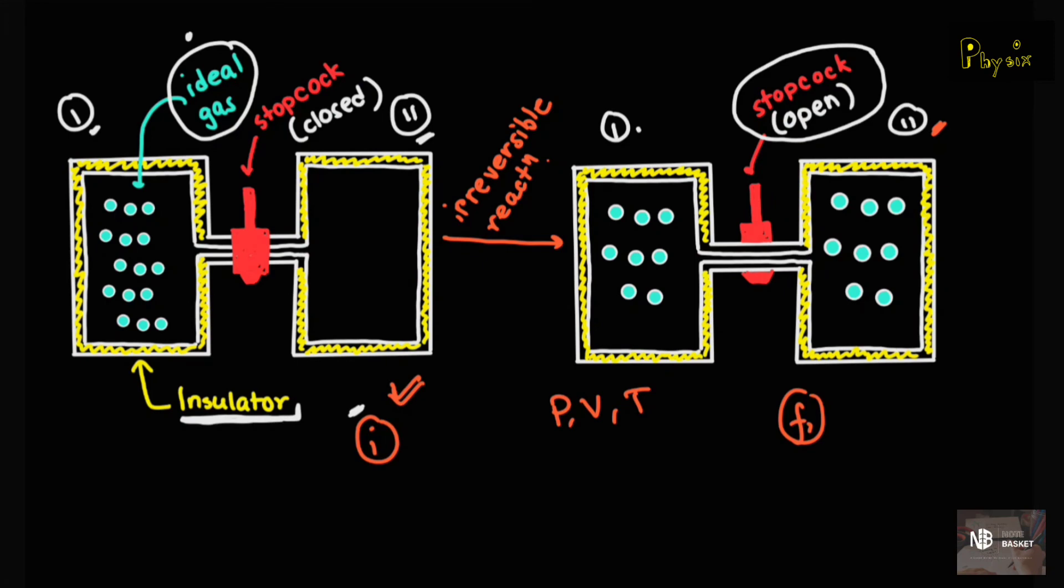Well, but if we replace this irreversible reaction over here with a reversible one, we can kind of trace the exact values of P, V, and T and find a relationship with the change in heat energy while the ideal gas flows from container one to container two as well as the change in temperature.